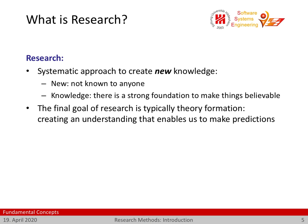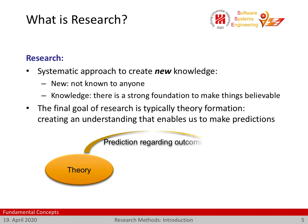The final goal of research is typically some form of theory formation. It's creating an understanding that enables us to make predictions — forecasting or predicting something which we have not yet seen or built is basically the hallmark of good research. Theory formation is one aspect: we try to create a theory in research, and this theory is then used to predict an outcome. Then we can perform experiments and validate whether this outcome is actually what we observe in reality.